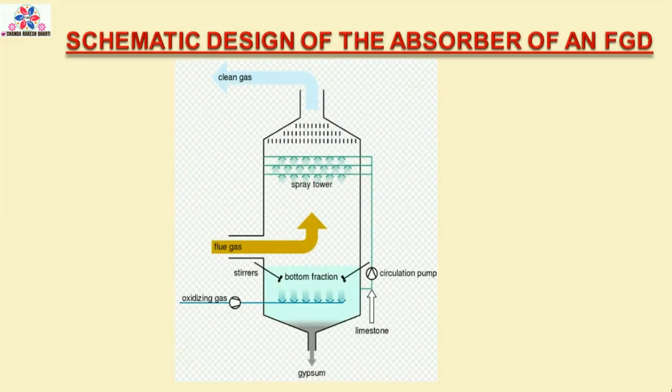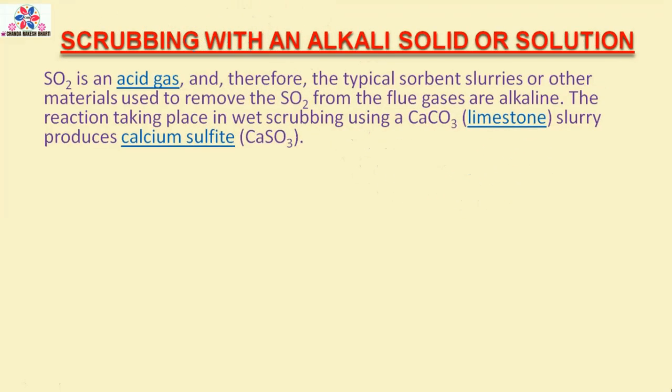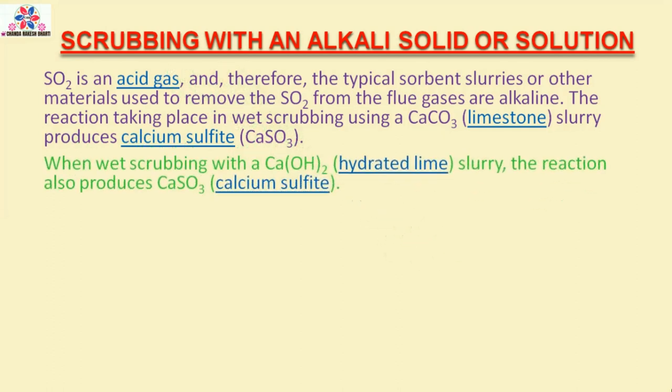Schematic design of the absorber of an FGD — scrubbing with an alkali solid or solution. SO2 is an acid gas, and therefore the typical sorbent slurries or other materials used to remove the SO2 from the flue gases are alkaline. The reaction taking place in wet scrubbing using a CaCO3 slurry produces calcium sulfite.